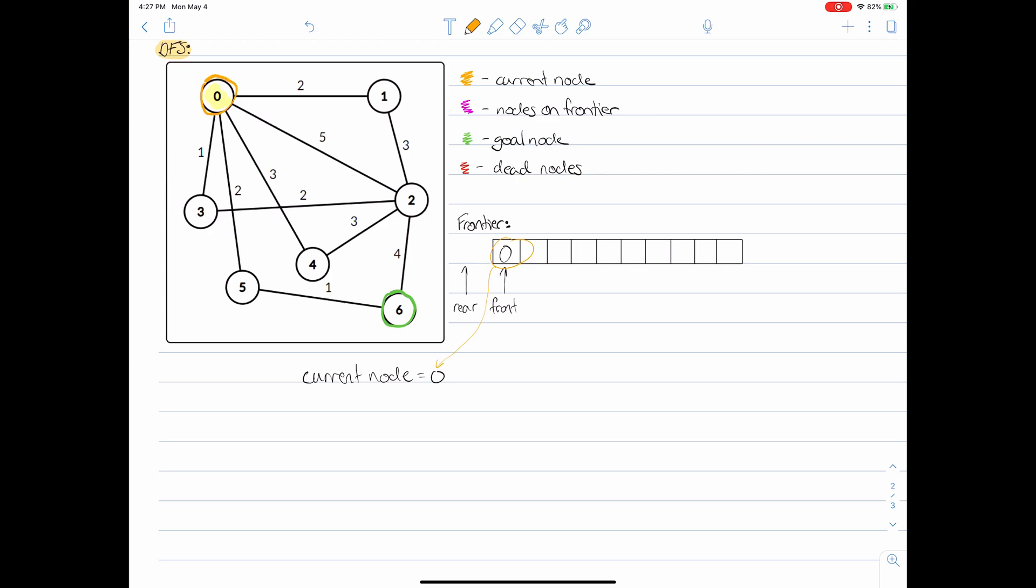Now zero is our current node and we're going to expand node zero. We look at the first node which is the first successor of the current node and we ask the big question: is this node our goal node? Clearly it's not, so that means we need to add this node to our frontier. We increment our rear node and now this value becomes one. It replaces the zero that was previously there.